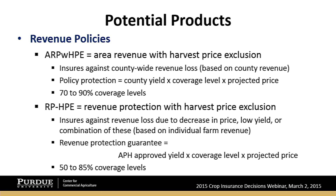There are two types of revenue protection policies. Revenue protection with harvest price exclusion is a little cheaper, but you don't get nearly the protection. For a year like 2012, where the harvest price was quite a bit higher than the projected price, you had substantially better revenue guarantees with the revenue protection product. In White County, you would not have received an indemnity payment if you'd had the harvest price exclusion version.